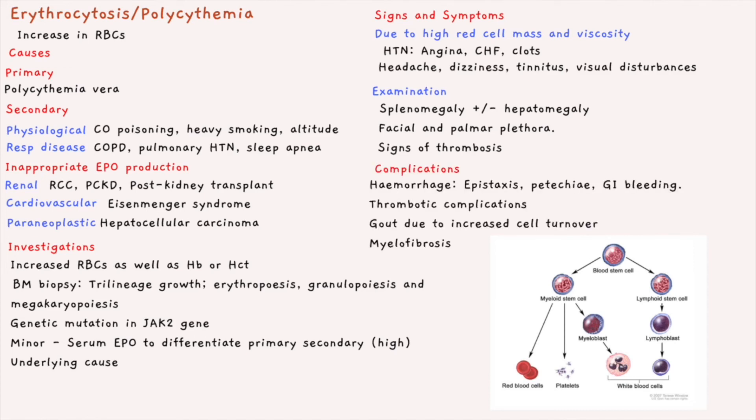Complications include hemorrhage — for example epistaxis, petechiae, and GI bleeding. Thrombotic complications arise due to reduced red blood cell quality. Increased cell turnover can lead to hyperuricemia and subsequent gout. Myelofibrosis is also a potential complication. Thank you for watching — we hope you learned something, and be sure to check out our video on myelofibrosis for more information.